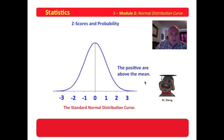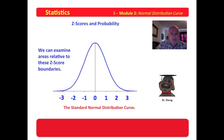The positive numbers are those values above the mean. The negative values are those numbers below the mean. So anytime we see a z-score and it's positive, we know it's above the mean. And if that z-score is negative, we know it's below the mean.